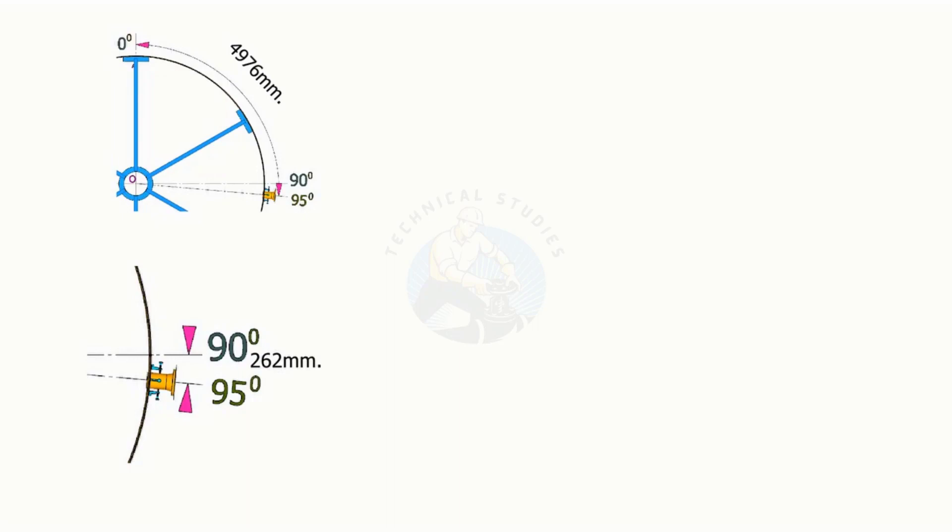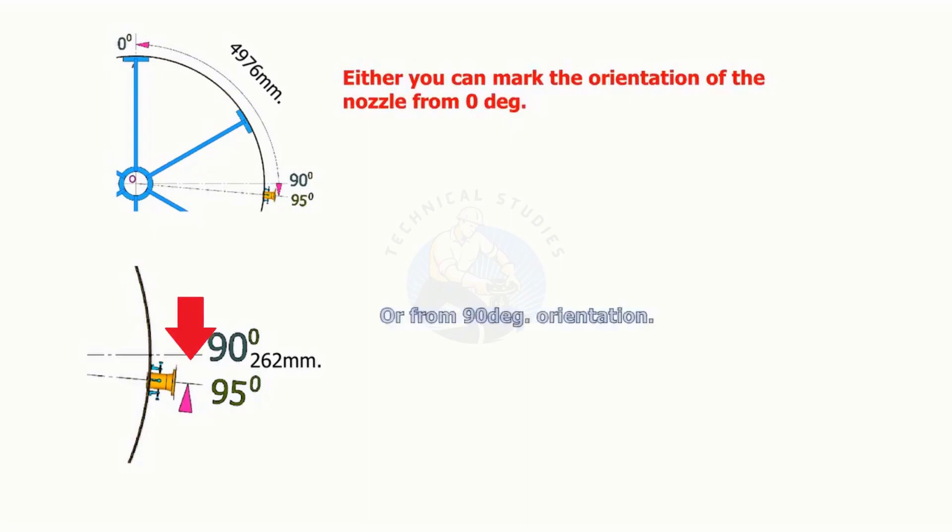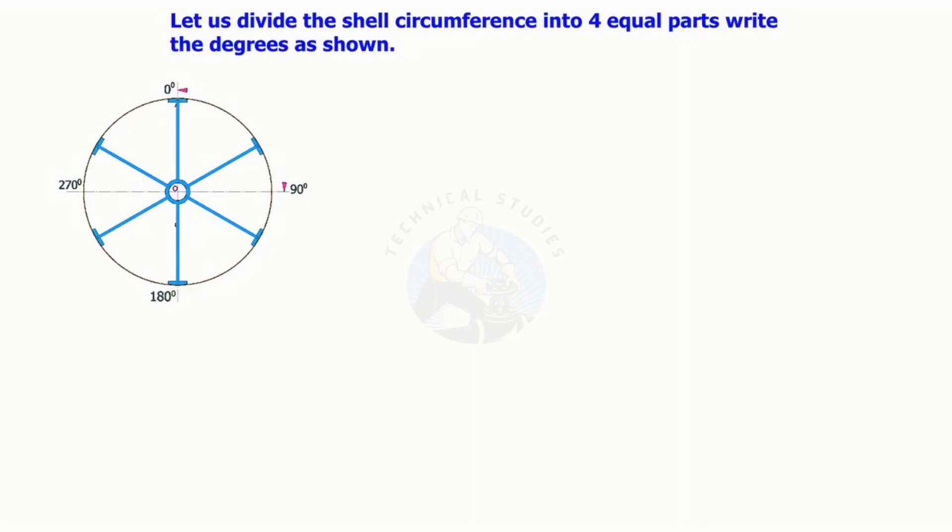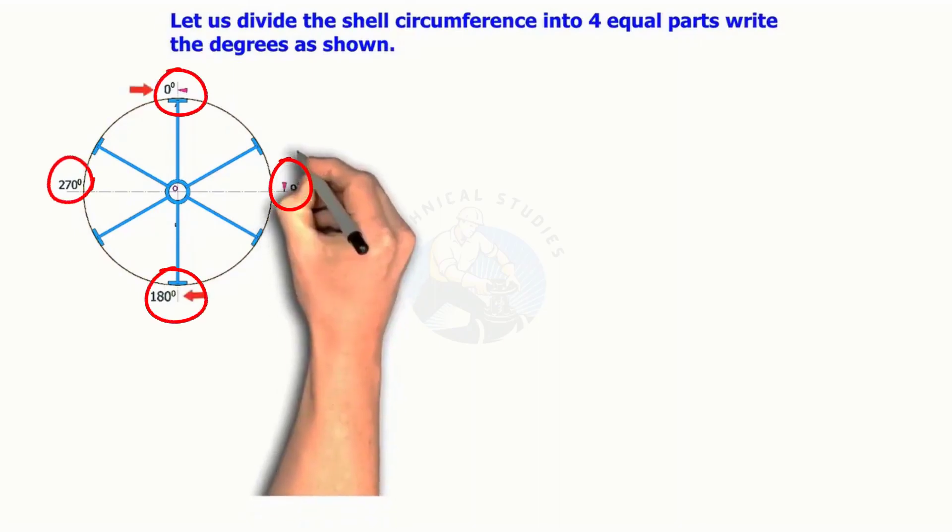You can either mark the orientation of the nozzle from 0 degrees or from 90 degree orientation. Divide the shell circumference into four equal parts and write the degrees as shown.